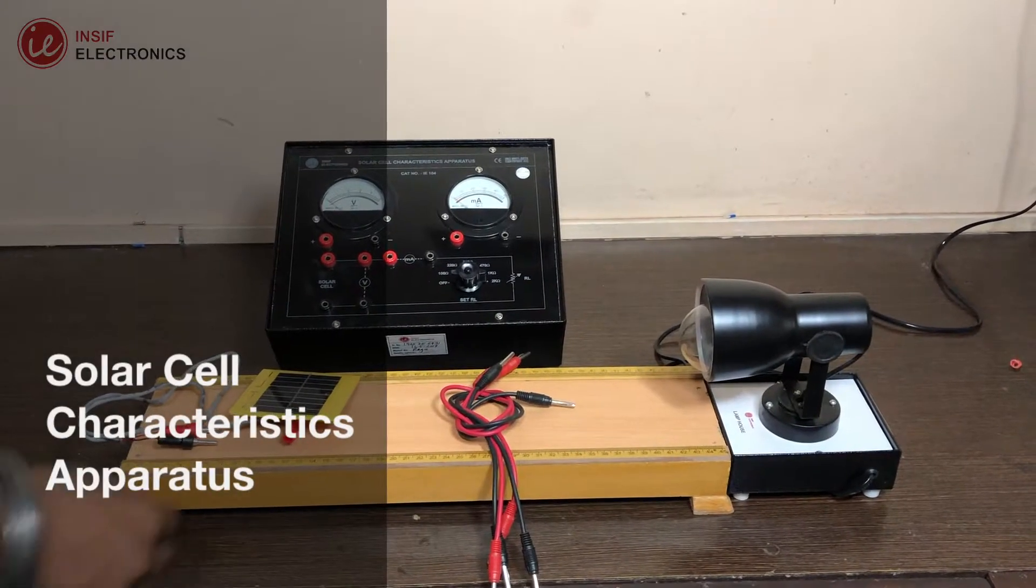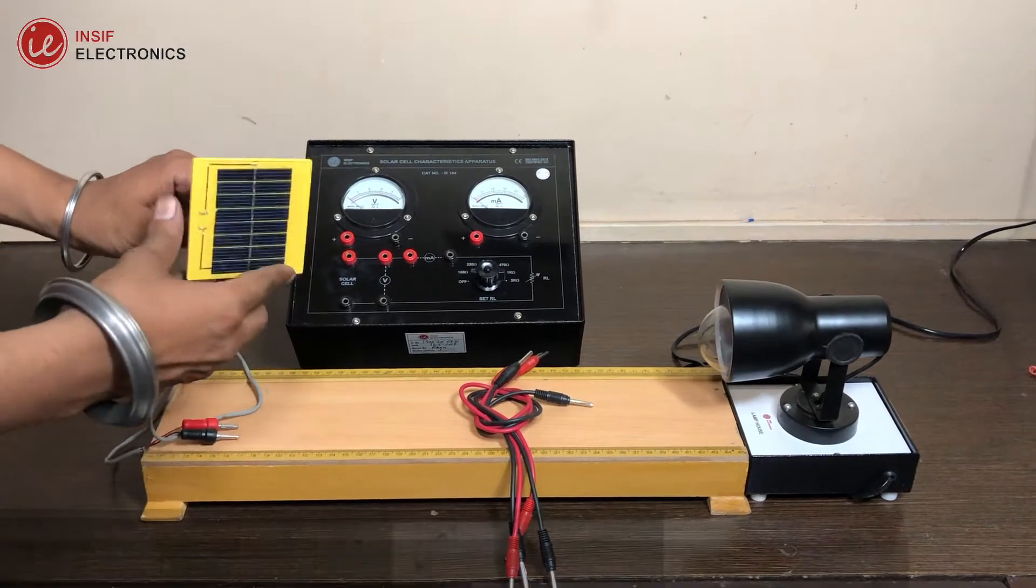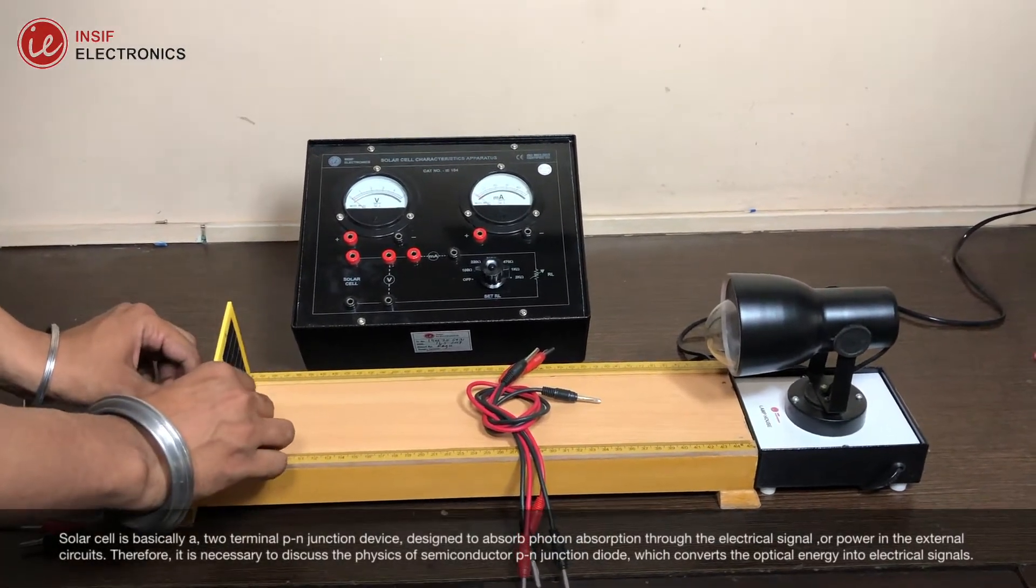Solar cell is basically a two-terminal PN junction device, designed to absorb photon absorption through the electrical signal or power in the external circuits.